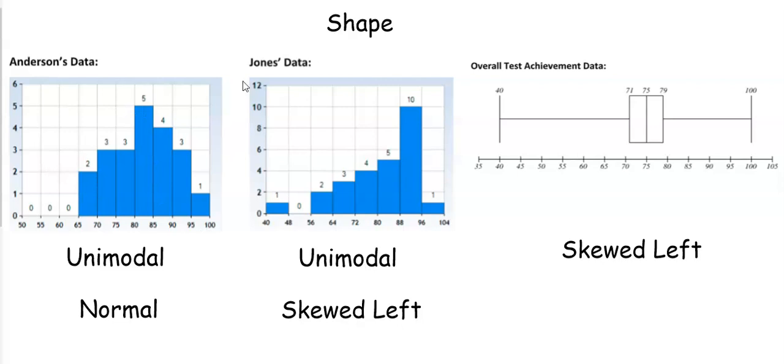Let's start with Anderson and we're starting with the shape. Anderson's data is unimodal because it has one peak and we can describe it as a normal distribution because it is fairly symmetric. If we look closely since the frequencies are listed here we can see that there are eight quiz scores to the left of the peak and eight quiz scores to the right of the peak. When you collect data in real life it would be very rare to have a perfectly symmetric data set but we're going to describe this as unimodal and normal.